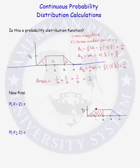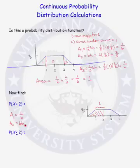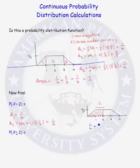We know the area of the triangle from before — region 1 was equal to 1/6. For what I'll call region 2 here, a rectangle with base length 1 and height 1/3, the area is 1/3. So the area under the curve between 0 and 2 equals 1/6 plus 1/3, which equals 1/2.